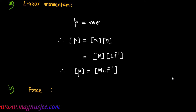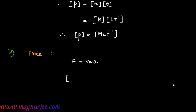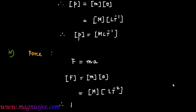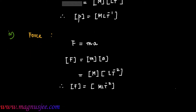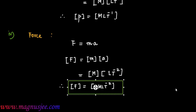Number 4 is force. Force F equals M dot A, where M is the mass and A is acceleration. Dimension of F equals dimension of m into dimension of A, which equals M into L T to the power minus 2. Therefore, dimension of force F equals M L T to the power minus 2.